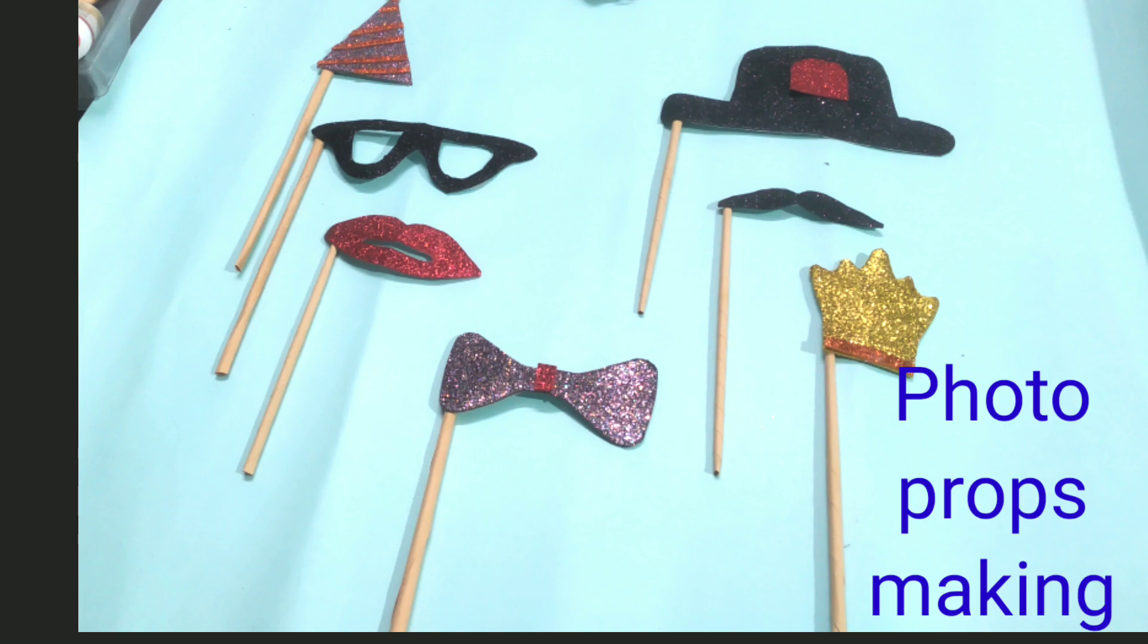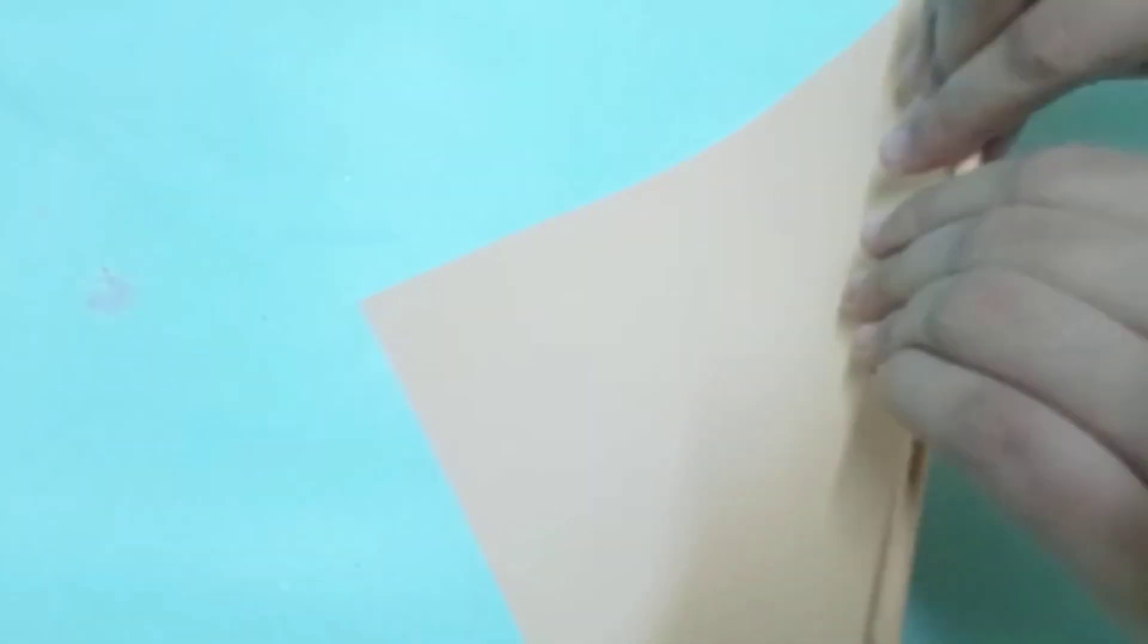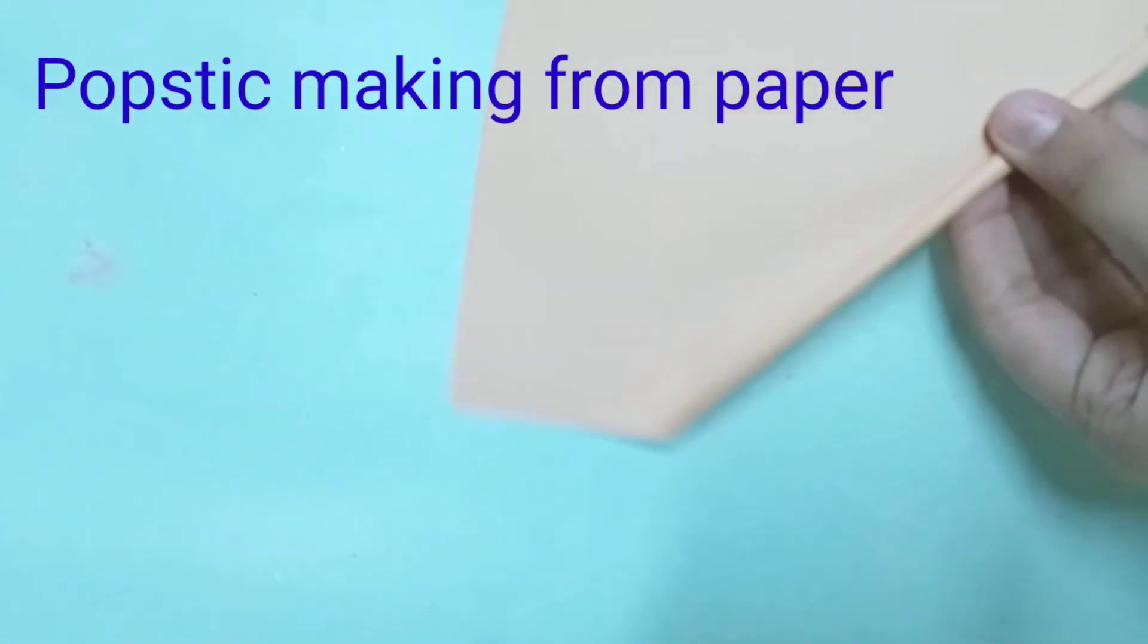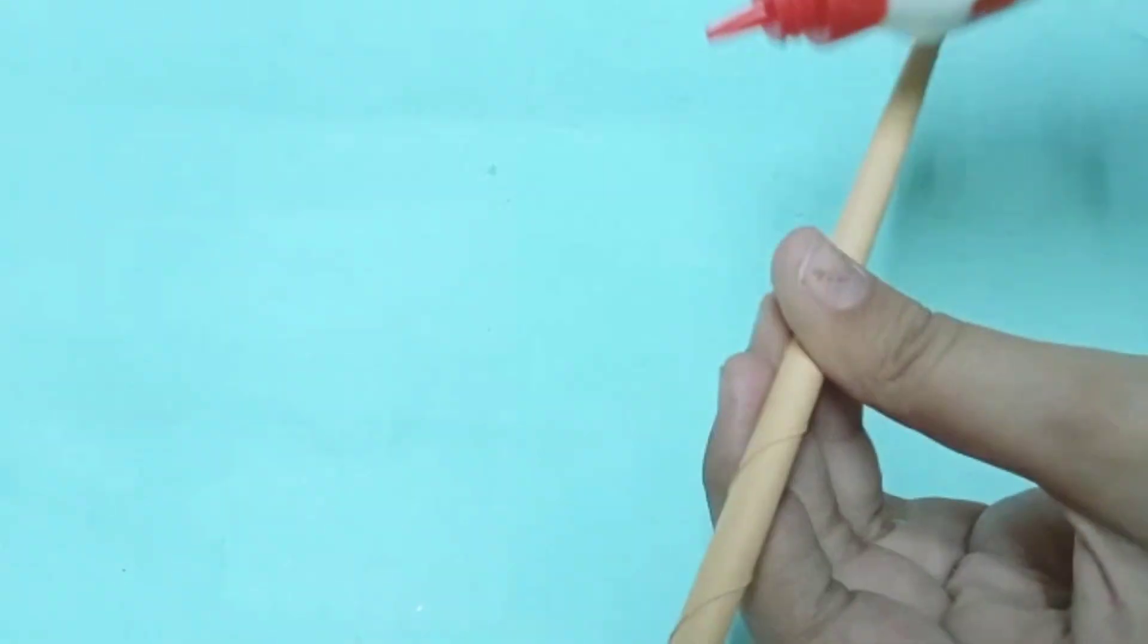It's time to make photo props. First for it, you have to take a rectangular piece of color paper and roll it from the end. Now roll it till the paper ends. Then stick the ends and cut it from the ends. Now our popstick is ready.